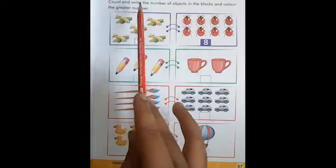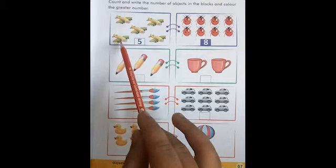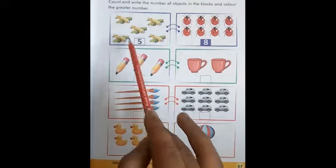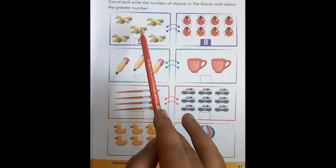What is this? This is the picture of aeroplanes. Count them: one, two, three, four, five.